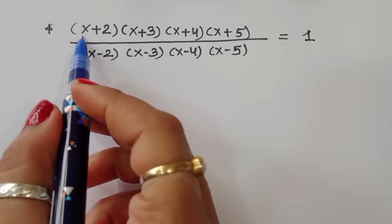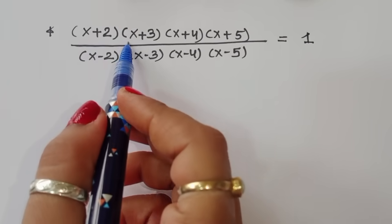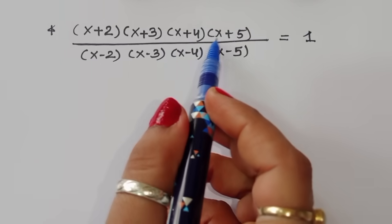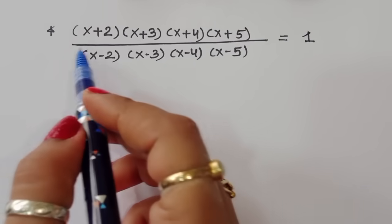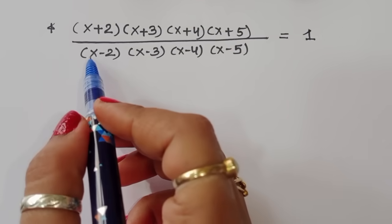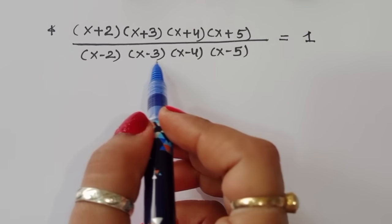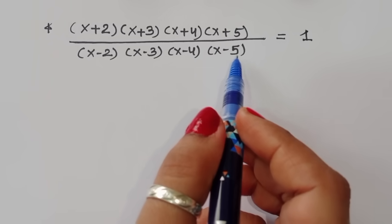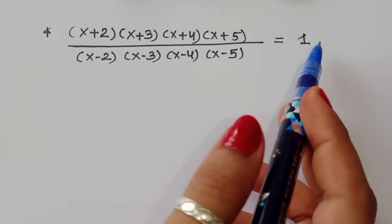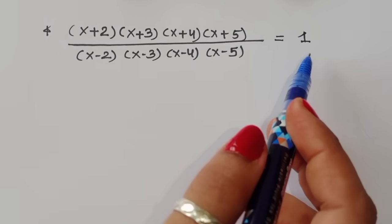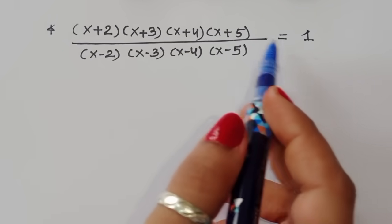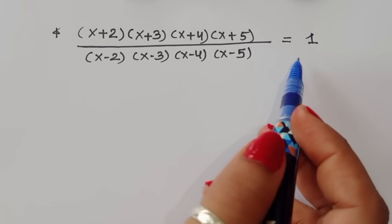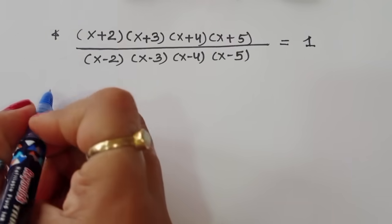The question is: (x+2)(x+3)(x+4)(x+5) divided by (x-2)(x-3)(x-4)(x-5) is equal to 1. We have to find out the value of x here. Let's see the solution.